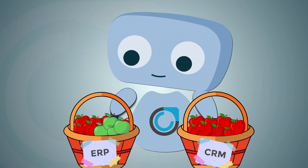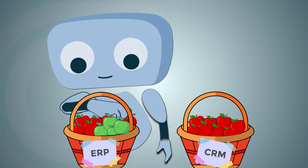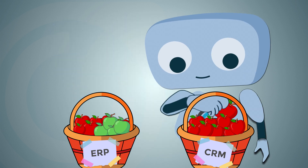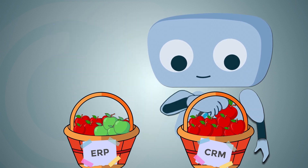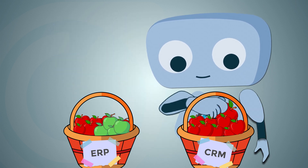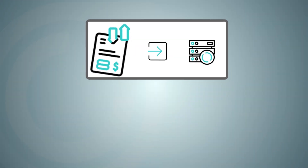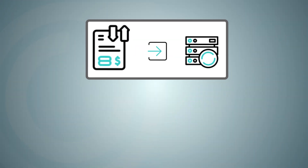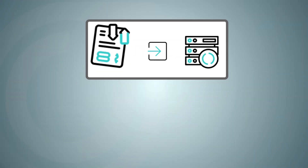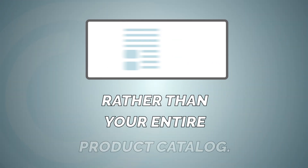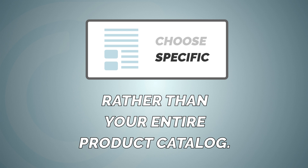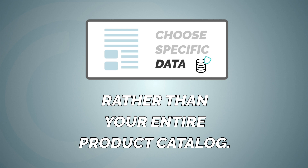A smart way to manage your integration is by applying filters to ensure that only the most relevant data is integrated. For example, instead of importing your entire invoice history, you could choose just the last year. Or maybe you only want active products, rather than your entire product catalog.